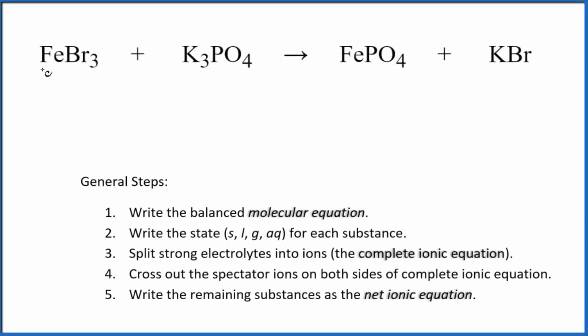Let's balance the net ionic equation FeBr3 plus K3PO4. Iron 3 bromide and this is potassium phosphate. So the first thing we need to do with a net ionic equation, we need to balance the molecular equation. This is the molecular equation here.